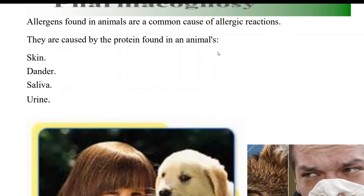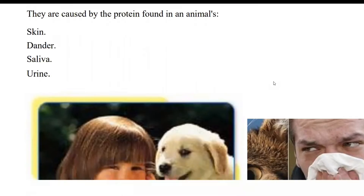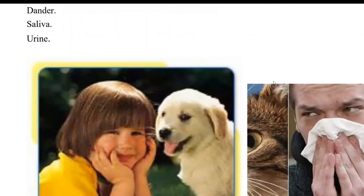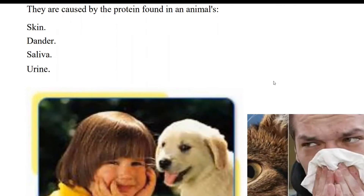As we have already taught, whatever allergen is present, it is always protein in nature. In animal skin, dander, saliva, and urine, specific proteins are present. When your body comes into contact with these causative agents, you can have allergic reactions - most commonly contact allergy or inhalation allergy. Animal dander can also enter through the inhalation route.